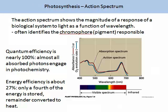Action spectrums are very useful to photobiologists. They show the magnitude of response of a biological system to light as a function of wavelength. In the image we have an action spectrum showing the chromophore pigment responsible for light absorption and where the light is being absorbed. You can see that between 400 and 500 nanometres light is being used, and again between 650 and 690. Quantum efficiency is nearly 100%; almost all absorbed photons engage in photochemistry. Energy efficiency is about 27% — only about a quarter of the energy is stored, and the remainder is converted to heat, which is waste.